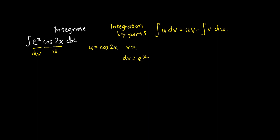We do not know what v is and we do not know what du is. But we know that du is the differentiation of u, so this is the same as negative 2 sine 2x. While v is the integration of dv, so that will be e to the power of x.